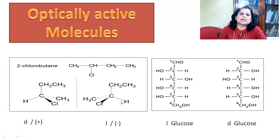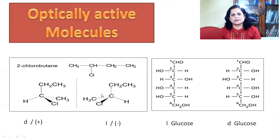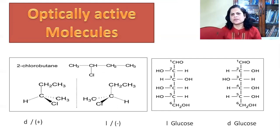Some more examples of optically active molecules: 2-chlorobutane. In 2-chlorobutane, the carbon is an asymmetric carbon atom because it is bonded with four different groups — hydrogen, chlorine, methyl group, and ethyl group. The dextro form rotates the plane polarized light towards the right side, and the levo form rotates it towards the left side. These are non-superimposable mirror images of each other.